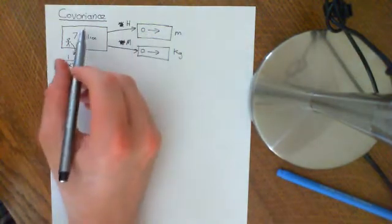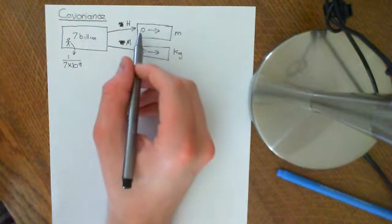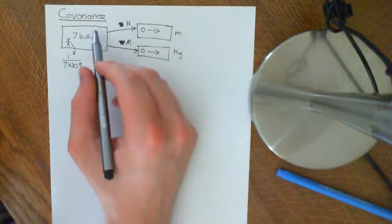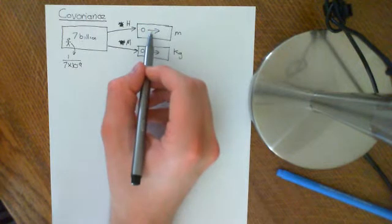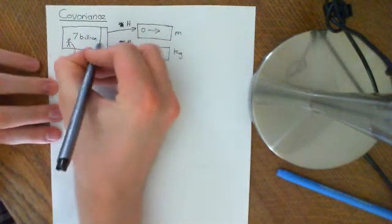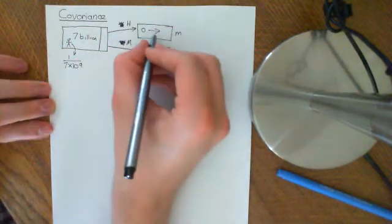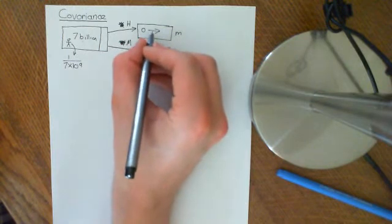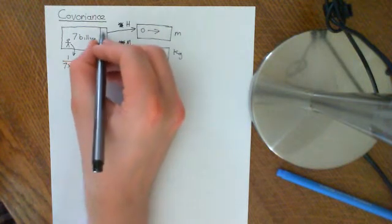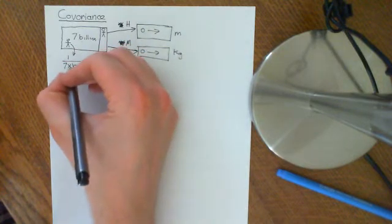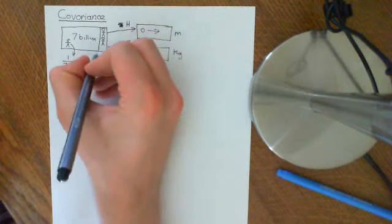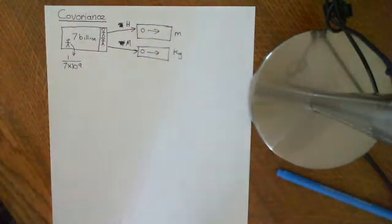There will be a certain group of people all ascribed to a certain height — some people might have exactly the same height. That group of people will all be ascribed the same number. The probability of a certain height turning up will be the number of people who all have that height, times 1 divided by 7 times 10 to the 9, since each person has equal probability.